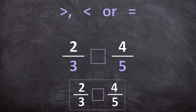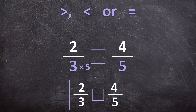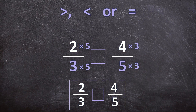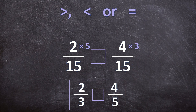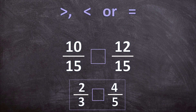I cannot multiply the 3 by anything to get 5, and I cannot multiply the 5 by anything to get 3, so we need to find the lowest common multiple for 3 and 5. If I multiply 3 by 5 it's going to be 15, and if I multiply 5 by 3 it's also going to be 15, so I can take both denominators to 15. I also need to multiply the first numerator by 5 and the second numerator by 3. So: 3 times 5 is 15, 5 times 3 is 15, 2 times 5 is 10, and 4 times 3 is 12. Now that our denominators are the same we can go ahead and compare the numerators.